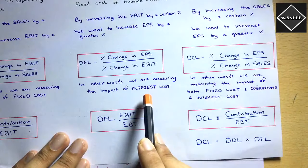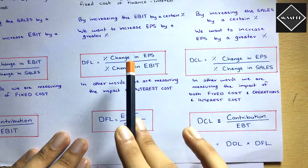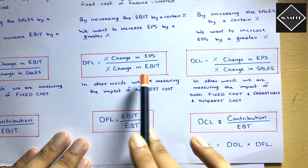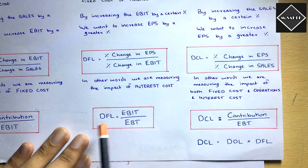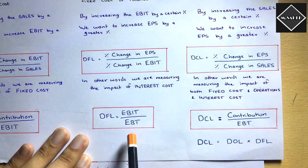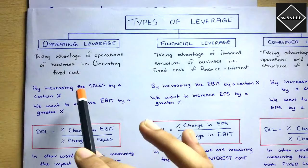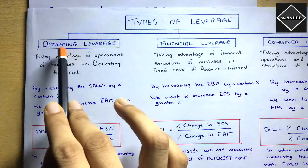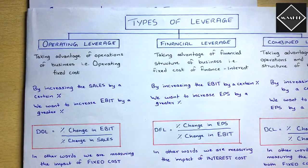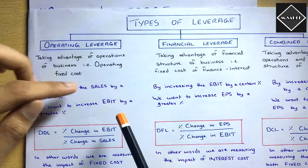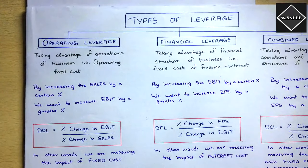There are two formulas for financial leverage: percentage change in EPS divided by percentage change in EBIT, and the shortcut formula: DFL = EBIT divided by EBT. The relationship in operating leverage is between sales and EBIT, while in financial leverage the relationship is between EBIT and EPS.